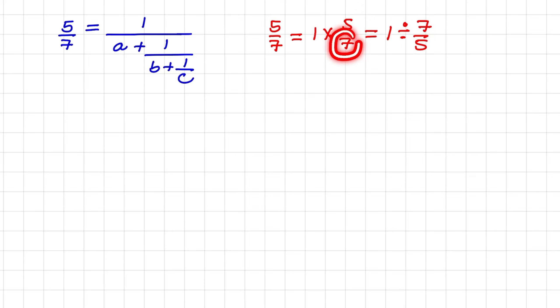Meaning the denominator becomes the numerator, and the numerator becomes the denominator. And if I rewrite this expression in a fraction form, I'll have 1 divided by 7 over 5.